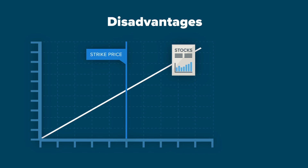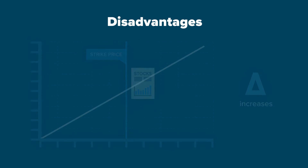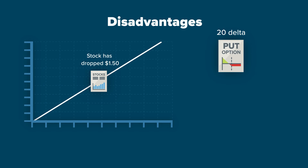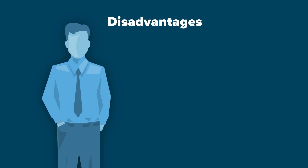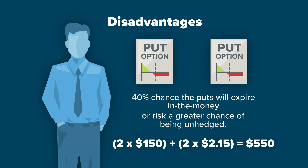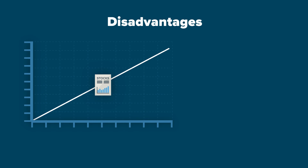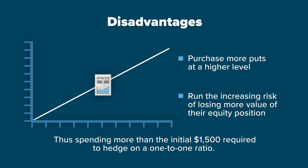The disadvantages are, if the stock falls towards the strike, the delta of the put increases and the trader must decide on whether they will purchase more of the puts at possibly a higher price than $1.50. For example, the stock has dropped $1.50 and the 20 delta puts the investor previously purchased are now a 40 delta and are trading for $2.15. The investor needs to decide whether they purchase another 2 puts, since there is now a 40% chance the puts will expire in the money, or risk a greater chance of being unhedged. The stock could continue to fall and the investor may need to either purchase more puts at a higher level or run the increasing risk of losing more value of their equity position, thus spending more than the initial $1,500 required to hedge on a one-to-one ratio.